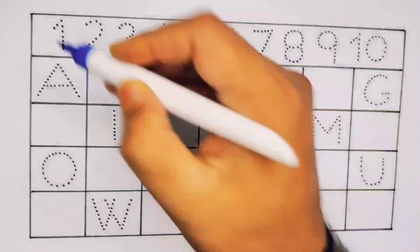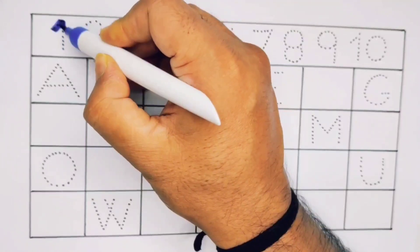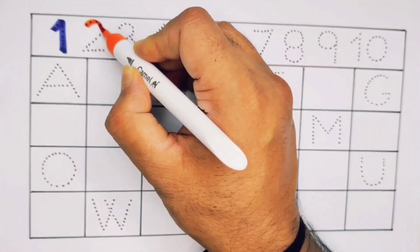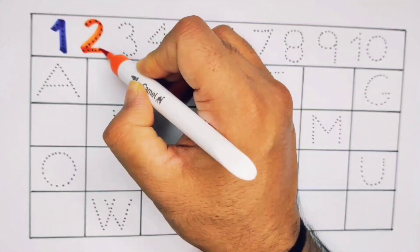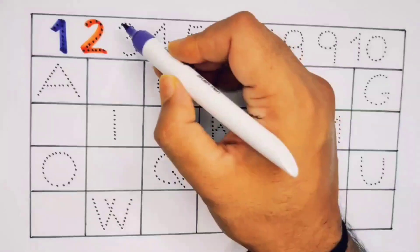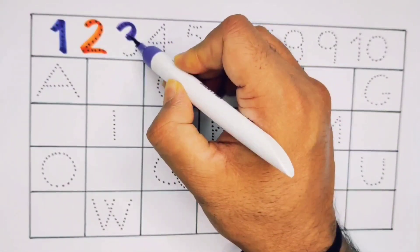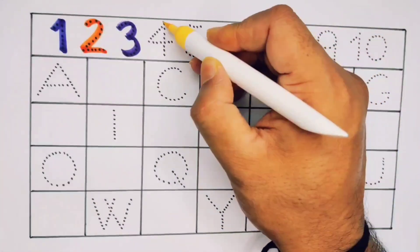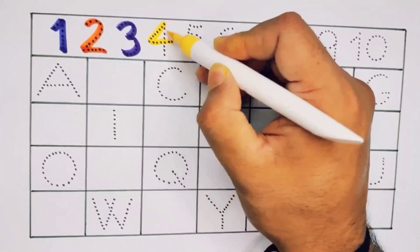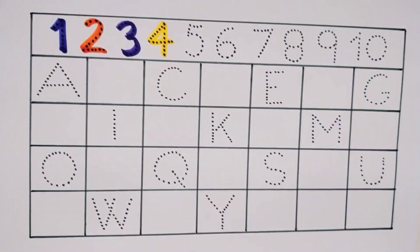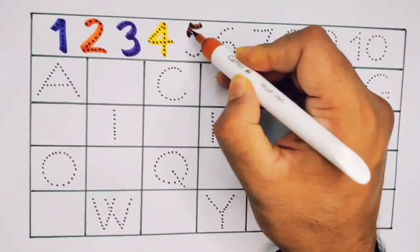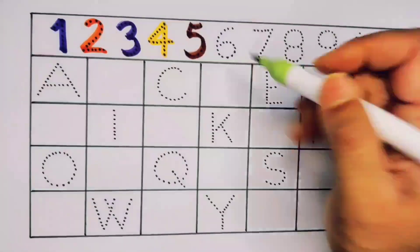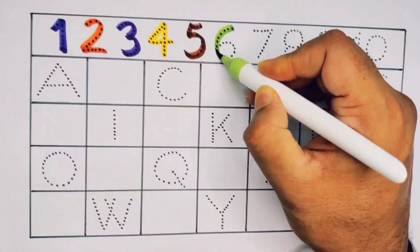Number one. Next, it's number two. Next, it's number three. What will next, kids? It's number four. Next, it's number five.